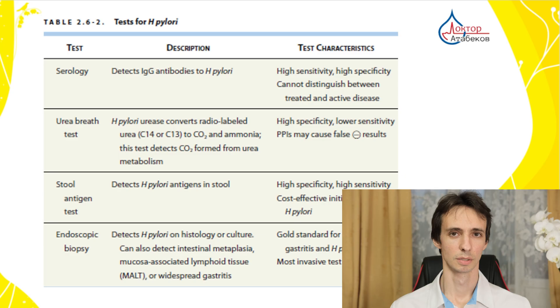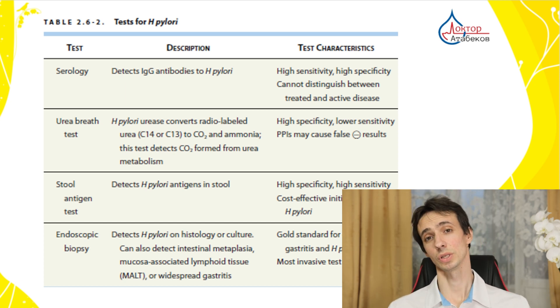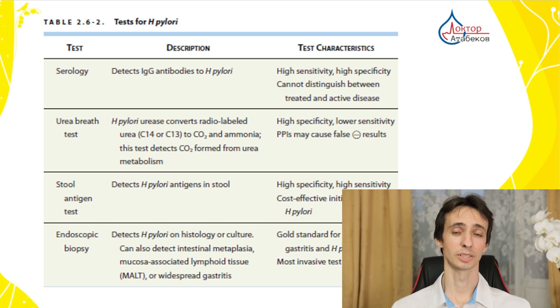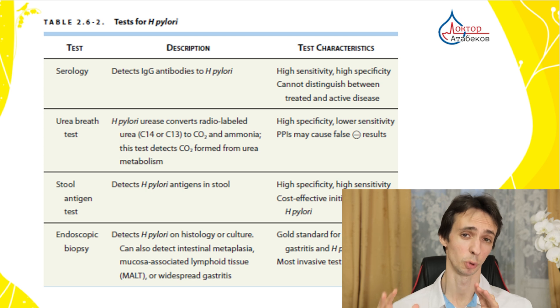Gastroscopy allows us to see the stomach, do biopsies, take samples, examine them under a microscope for any problems or cancer risk, and also see the bacteria directly. There is also a very modern and good test: we can take a stool sample and detect small pieces of bacteria — this is called the stool antigen test for Helicobacter. It is both sensitive and specific, meaning it has a low risk of false results.